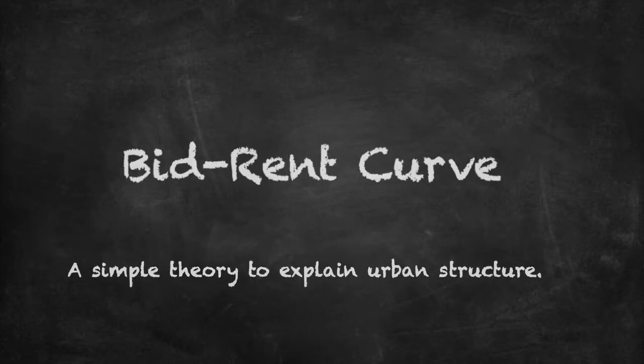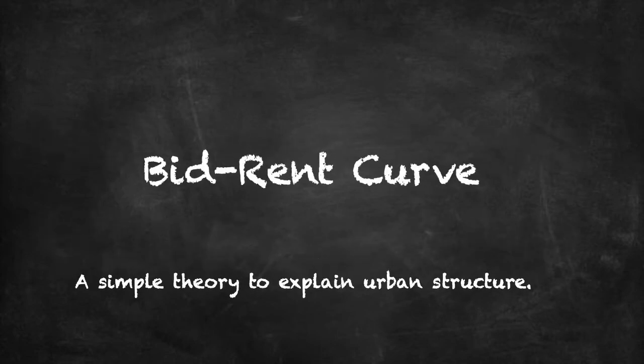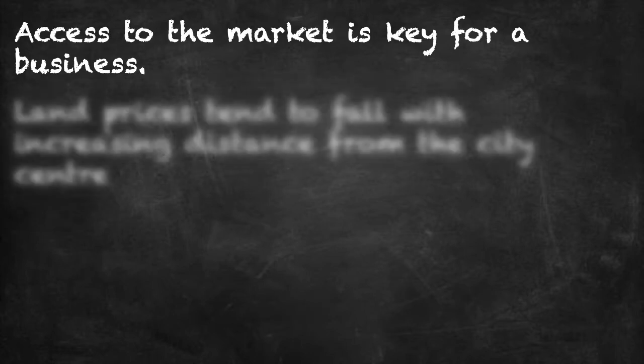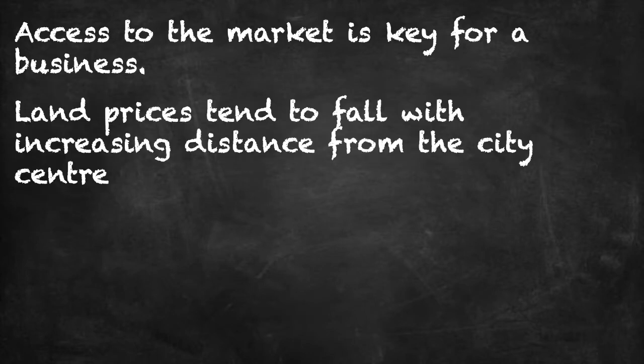Let us look in this lesson at the bid-rent curve. It's a simple theory to explain urban structure. When we think about land within the urban area, access to the market is key for any business. The value of land tends to fall as you have an increasing distance from the city centre, because business wants to be in the centre of the city.